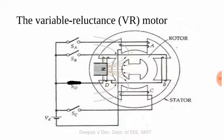For clockwise direction, the excitation sequence is: A excite, then D excite, then C excite, then B excite. This gives clockwise rotation. For counter-clockwise direction, the sequence is reversed.